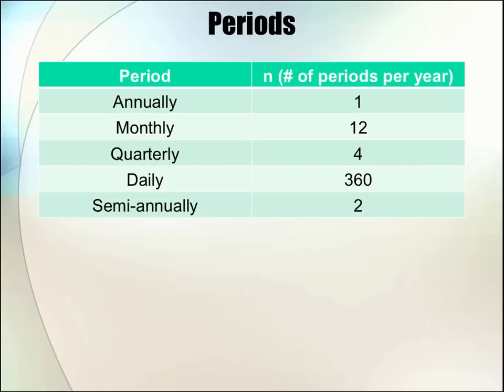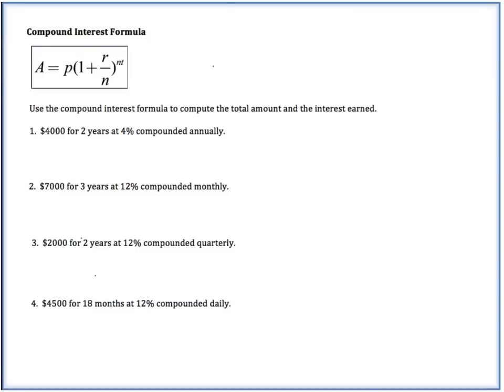Now if you want to find N, which is the number of periods per year, we can think about it this way. If something is compounded annually, that means it's compounded once per year. So N would equal 1. If you have compounding monthly, that means every month it compounds, meaning there are 12 compounds in a year. If you're compounding quarterly, that means there are 4 periods per year, because there's 4 quarters in a year. If you're compounding daily, we're going to say there are 360 days in a year. Another one you might see is something called semi-annually, and that means there are 2 periods in the year.